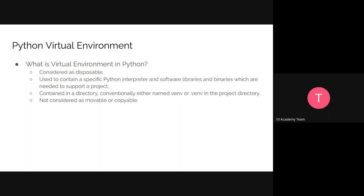Moving on to the next topic: setting up a Python virtual environment. What is a virtual environment? You can think of it as a workspace — something disposable that you can use one environment per project. We want to specify virtual environments for every project so they don't collide with one another. It's a safe space for you to work on your project, containing specific Python interpreters, libraries, and binaries needed to support that project.